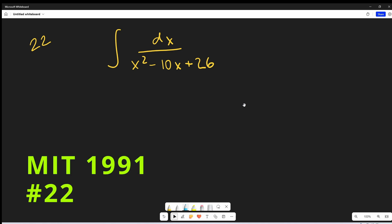Okay, I thought I'd try to do a quick integral from the MIT Integration Bee 1991. We have here problem number 22. It's the integral of 1 over x squared minus 10x plus 26 dx.